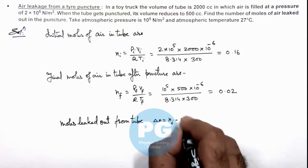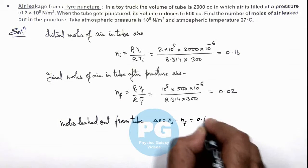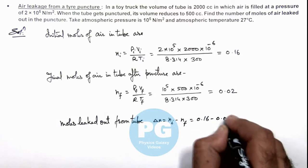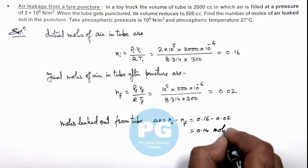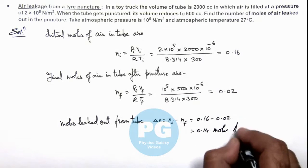n_f which is 0.16 minus 0.02, that is 0.14 moles are leaked out. That is the result of this problem.